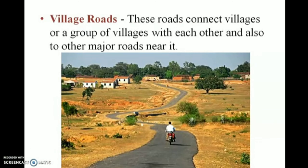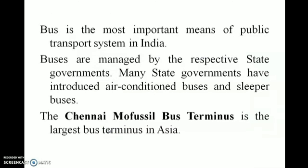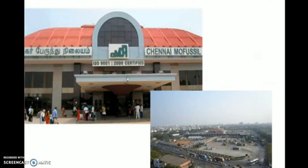Village roads connect villages or a group of villages with each other and also to other major roads nearby. Bus is the most important means of public transport in India. Buses are managed by state governments. Many state governments have introduced air-conditioned buses and sleeper buses. The Chennai Mofussil Bus Terminus in Chennai is the largest bus terminus in Asia.